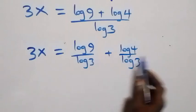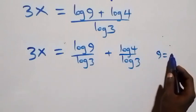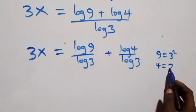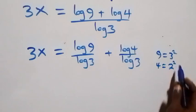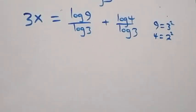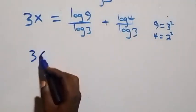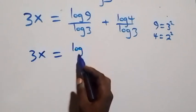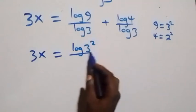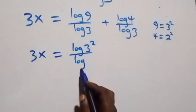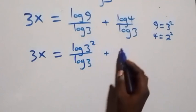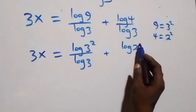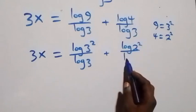We can express 9 as 3 squared, and 4 as 2 squared. So what we have becomes 3x equals log 3 squared over log 3, plus log 2 squared over log 3.